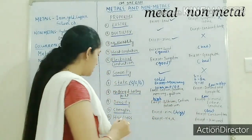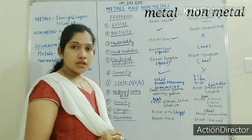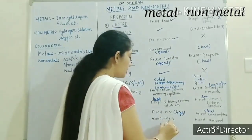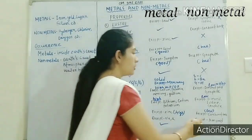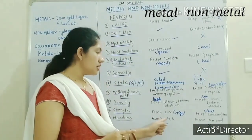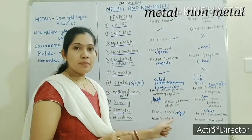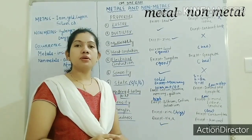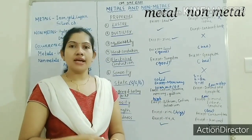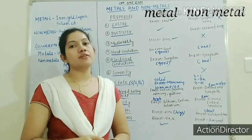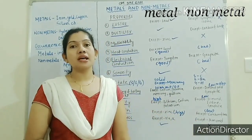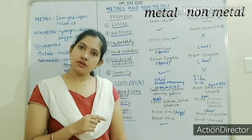Next is hardness — whether they are hard or not. Metals are hard and non-metals are soft. Exception: sodium and potassium are metals which are soft and can even be cut with a knife. And diamond is a non-metal which is hard.